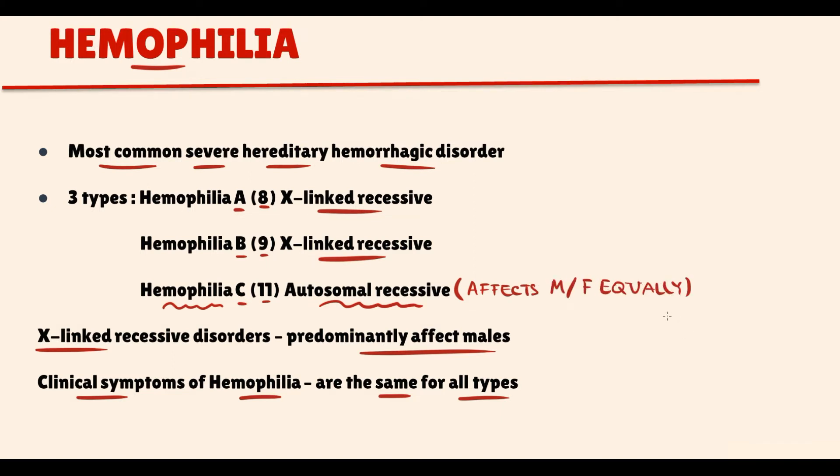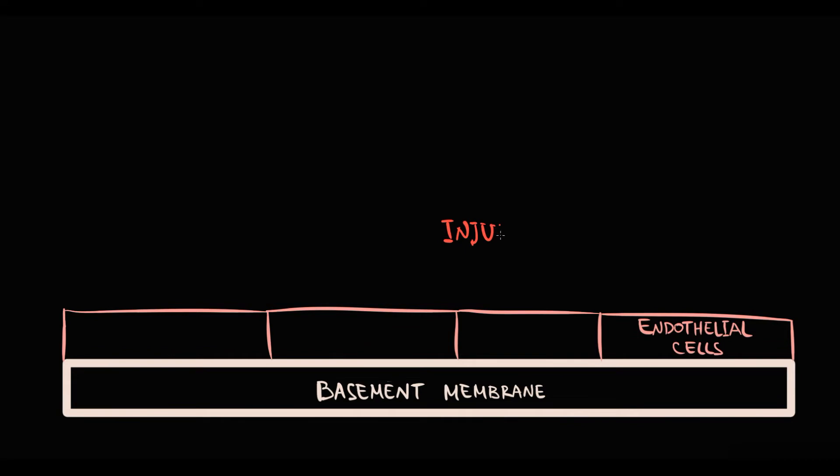To understand the entire pathogenesis of hemophilia, we have to recall hemostasis. So if damage to endothelial cell occurs, endothelin that was contained inside the endothelial cell will be released into the bloodstream and will cause transient vasoconstriction.